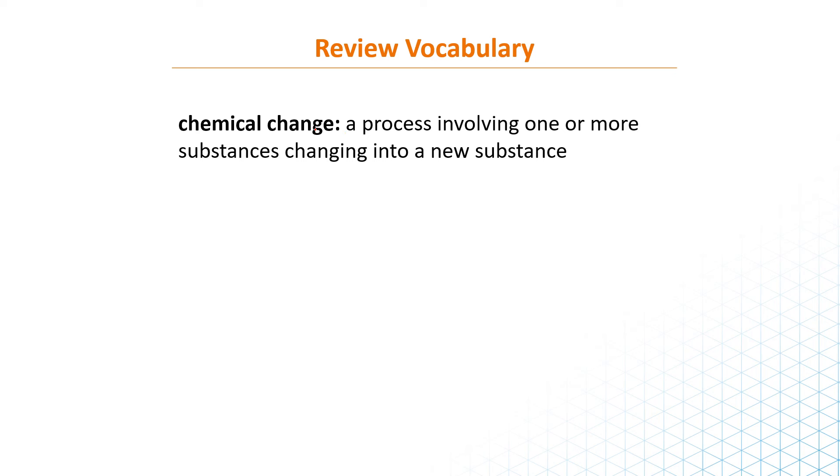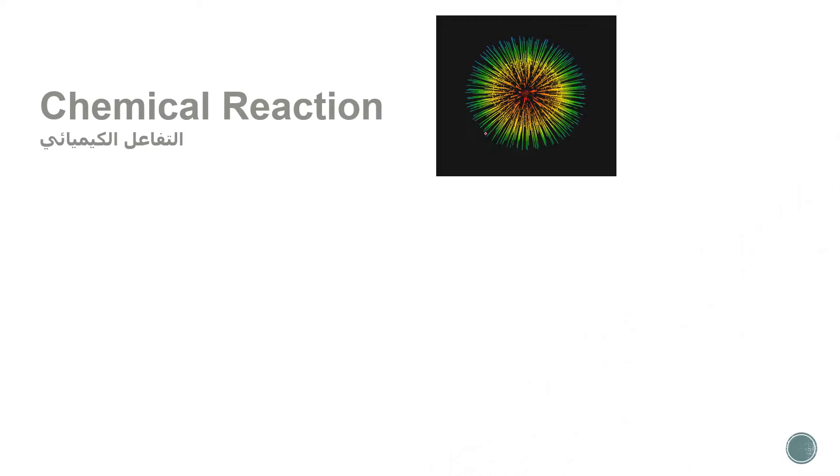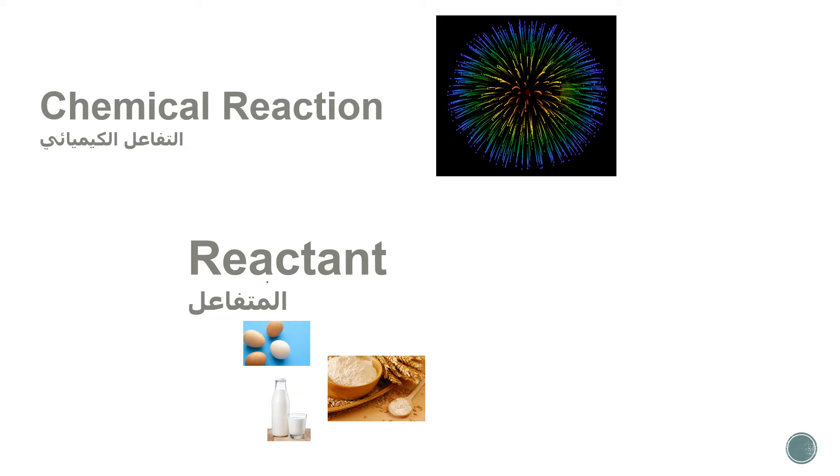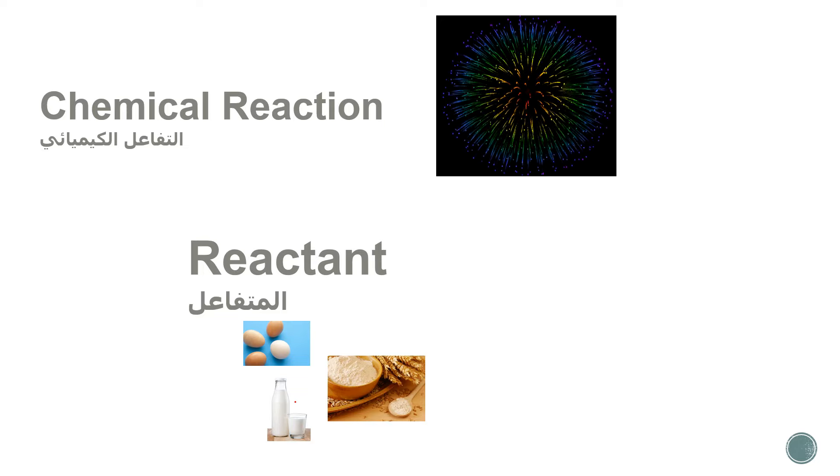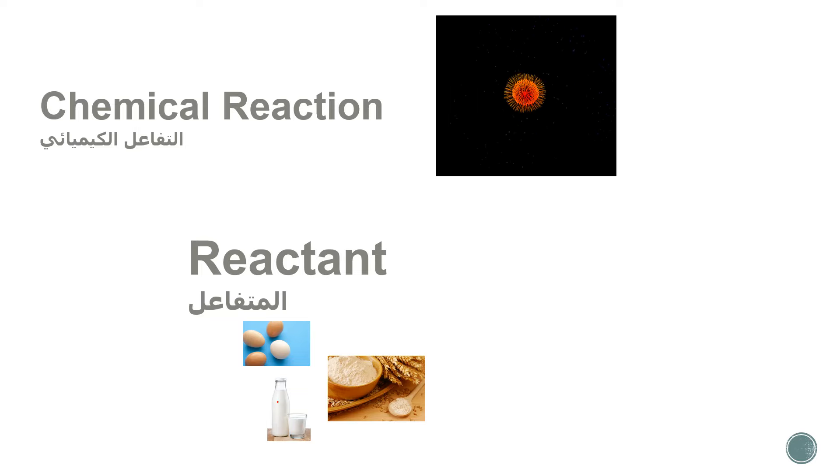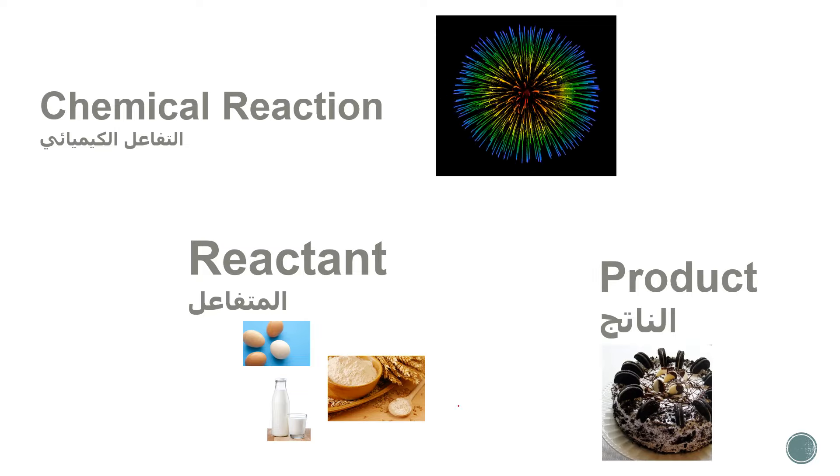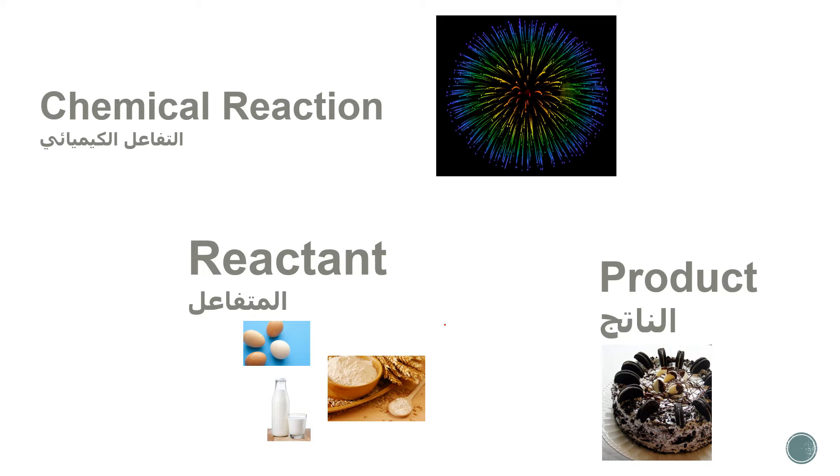When you purchase bananas from a grocery store, they might be green. Within a few days the bananas turn yellow. This color change is one of the ways you can tell a chemical reaction occurs. So the change of color is evidence for the occurrence of a chemical reaction. And that's what we are going to start our PowerPoint with. First of all we can go through these vocabulary keywords: chemical reaction, reactant المتفاعل, product الناتج, chemical equation المعادلة الكيميائية, coefficient المعامل.